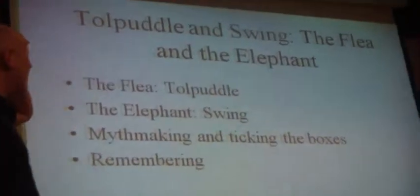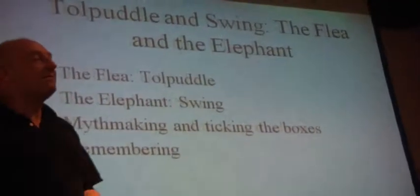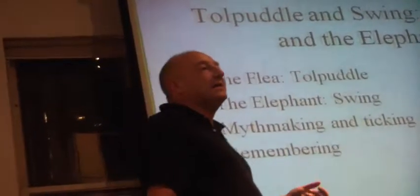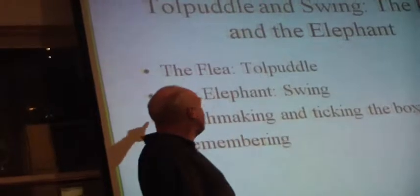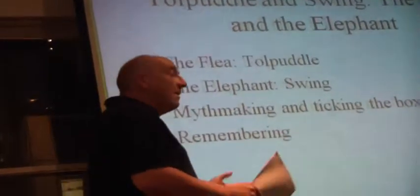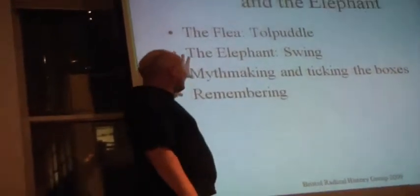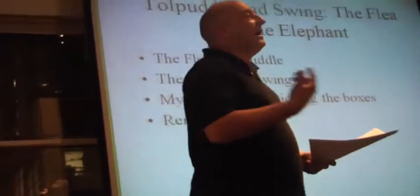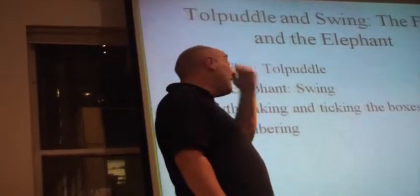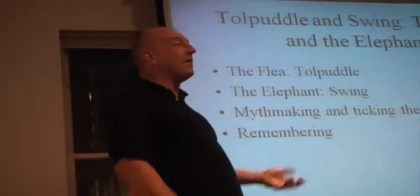I wrote an essay called The Flea and the Elephant: Tolpuddle and Swing. Because to me, Tolpuddle, although it's an iconic part of history, it's kind of a flea compared to this incident, Swing. Now Tolpuddle happened in 1834. Swing happened in 1830-31, so they're quite close together as two events. But it amazed me at the time that I could go into a meeting with a bunch of trade unionists, and a lot of them were rural organizers in these counties, and that they didn't know anything about Captain Swing, that they knew about this one incident. So I had to ask myself, why is that?